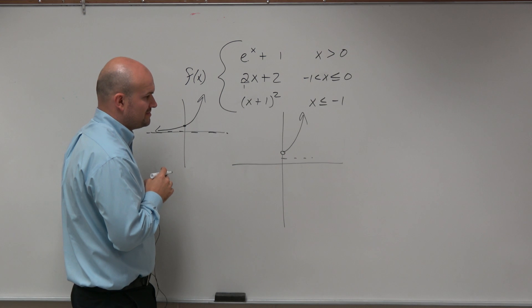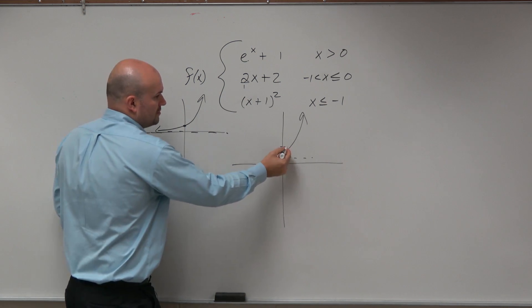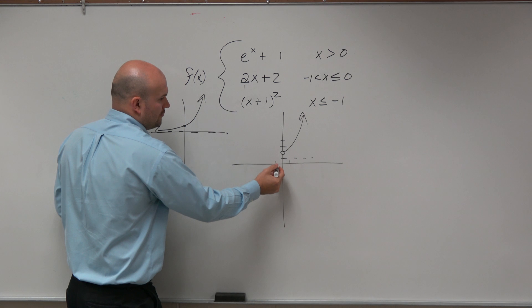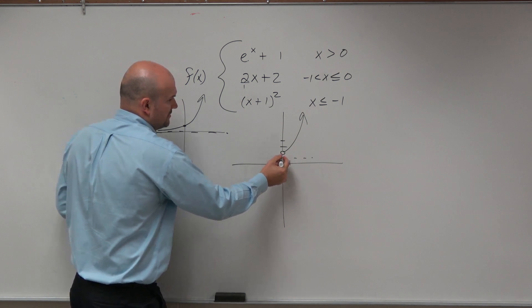Slope 2 over 1, y-intercept 2. Go over to 2. Go over to 2, up 2 over 1, or down 2 over 1. So the line looks something like that.